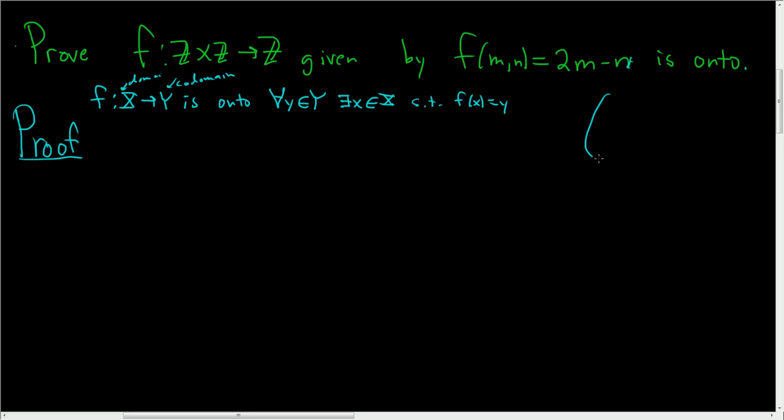such that f takes little x and sends it to y. So graphically what this means is, here's capital X and here's capital Y. Given any little y here, any one I want, I can find some little x which f sends to little y.